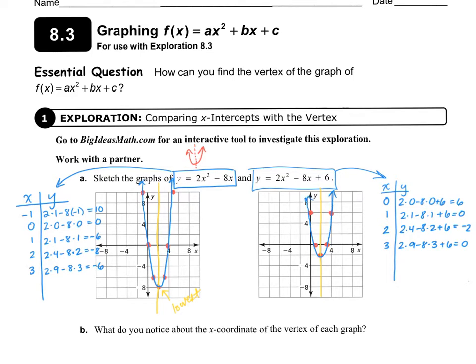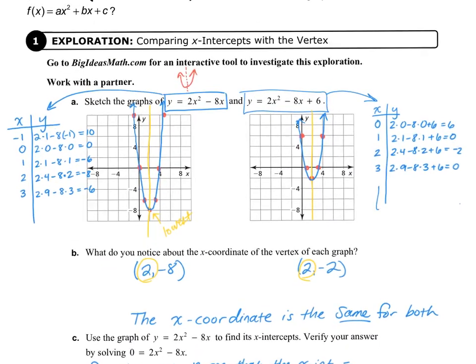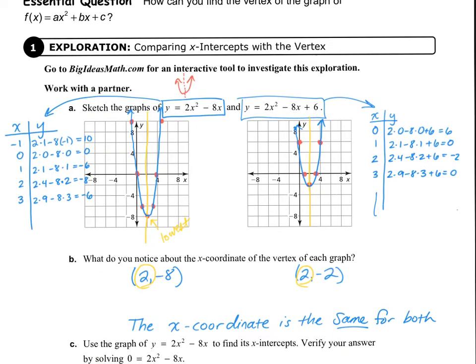The next question is asking us what we notice about the x-coordinate of the vertex of each graph. I notice that the x-coordinate on this graph over here, my vertex is 2 comma negative 8, and over here my vertex is 2 comma negative 2. Hopefully what you notice about these two points is that they both have the same x-coordinate. The x-coordinate is the same for both. Using the graph to find the x-intercepts, the left-hand graph will notice that the x-intercept is both at 0 and positive 4.